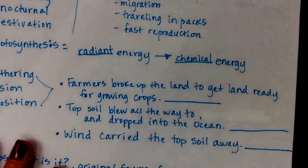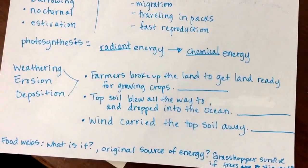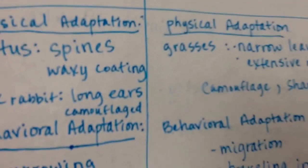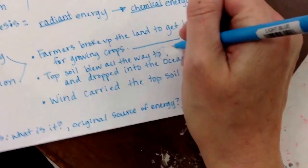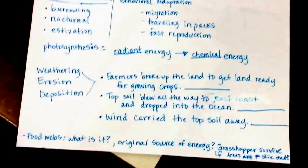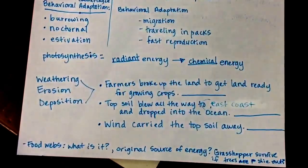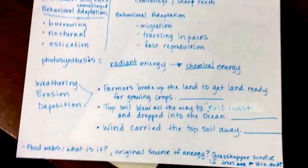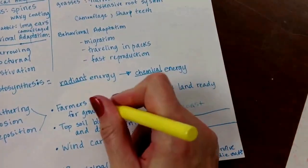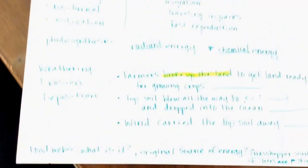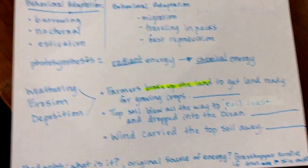So since I mentioned weathering, erosion, deposition, let's go back to this page. I have some examples to look at. You're going to decide which one of these three bullets is describing weathering, erosion, or deposition. So farmers broke up the land to get land ready for growing crops. The key word here, let me highlight it, is broke up the land. Broke up the land, that would be our weathering.